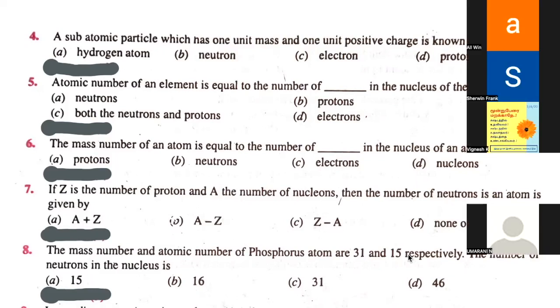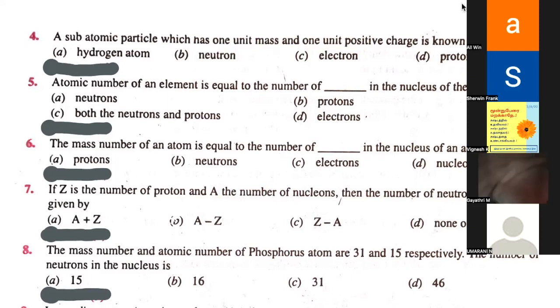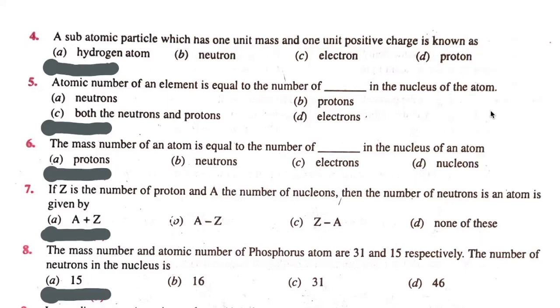First question. A sub-atomic particle which has one unit mass and one unit positive charge is known as: hydrogen atom, neutron, electron, or proton?